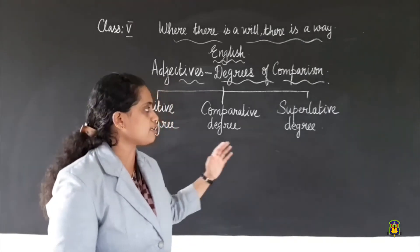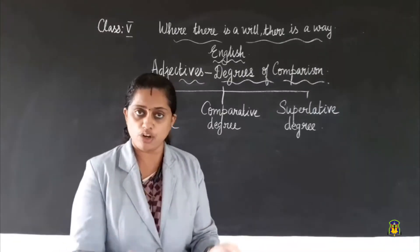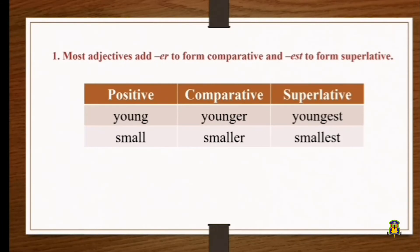Did you understand the three degrees of comparison? Now let us see how we form comparative and superlative degrees. The first way: most adjectives add -er to form the comparative and -est to form the superlative degree. For example, 'young' becomes 'younger' in the comparative and 'youngest' in the superlative. Similarly, 'small' becomes 'smaller' and 'smallest'.